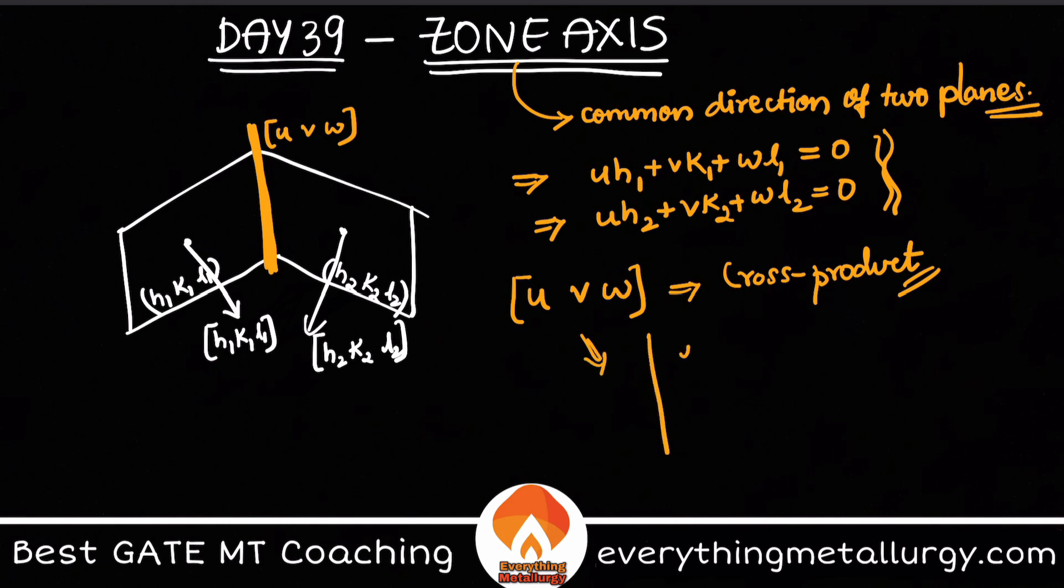So here how to calculate this cross product? Directly you can calculate by using determinants. So let me take i j k are nothing but the two, you know, coordinate axis, three coordinate axis, and we've got h1 k1 l1 and h2 k2 l2. So by doing this you can directly get the value of the vector which is perpendicular to these two vectors.